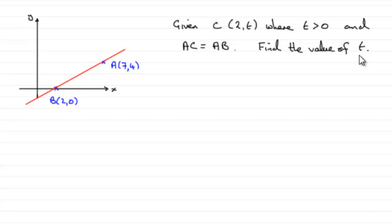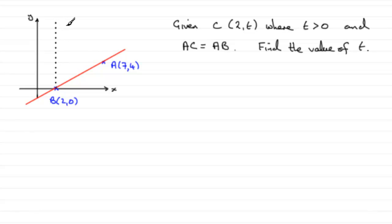So how are we going to do this? Well, clearly B is the point (2, 0), and if C has an x-coordinate of 2, then C has got to lie vertically above B. If we were to mark in a dotted line from here upward, we know that C must be on this line because it's always going to be two units in.